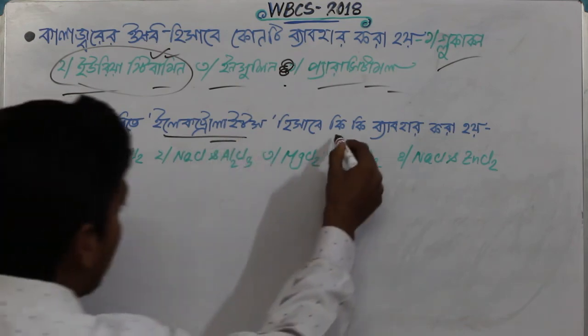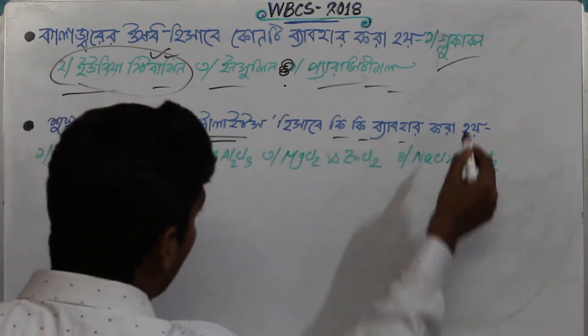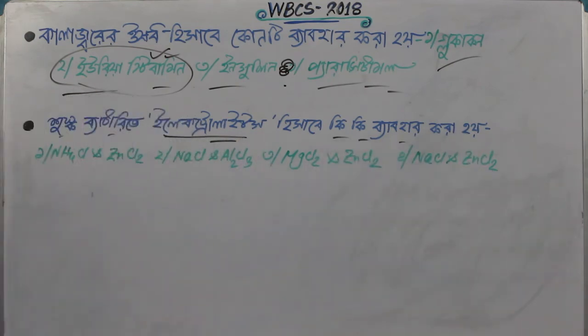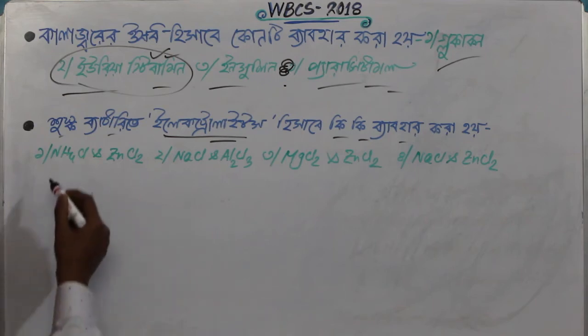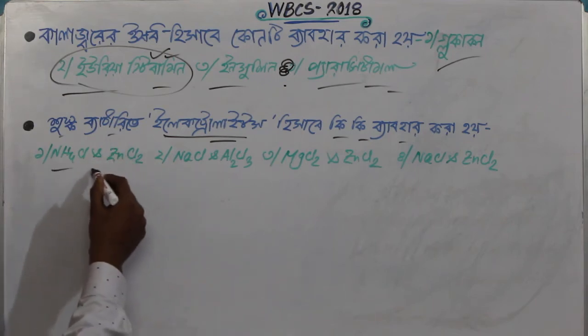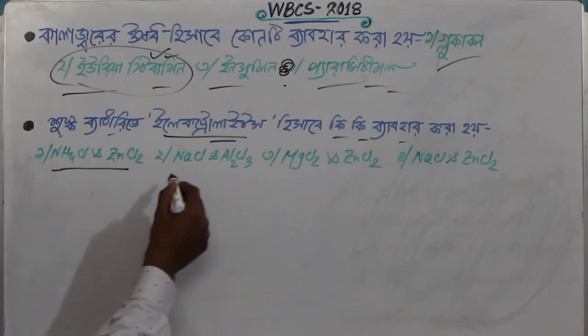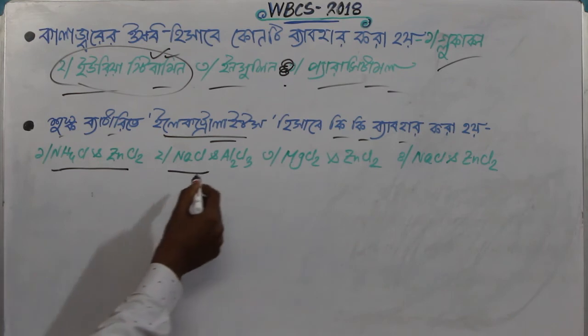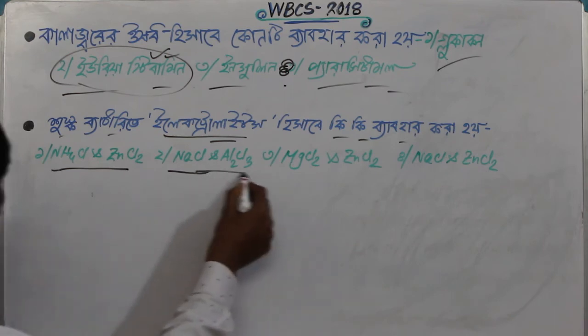The next question concerns which chemical compounds are used in a dry cell. The options include ammonium chloride and zinc chloride, and sodium chloride and aluminum chloride.